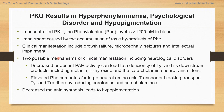In uncontrolled PKU, where there is a blockage of conversion of phenylalanine to tyrosine, the phenylalanine level rises above 1200 micromoles in blood. This accumulation of phenylalanine to toxic levels causes impairment of various functions, observed as clinical manifestations including growth failure, microcephaly, seizures, and intellectual impairment. There are two possible mechanisms by which these manifestations, including neurological disorders, occur.